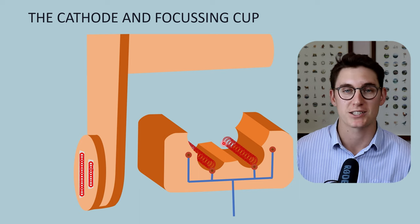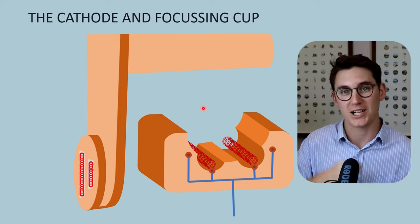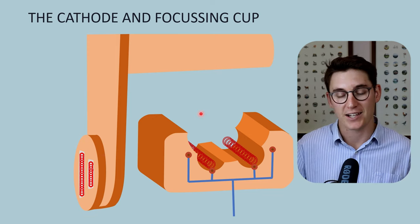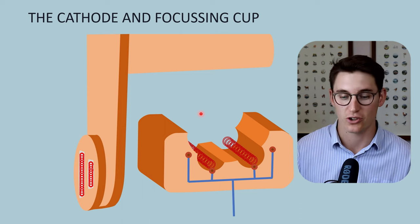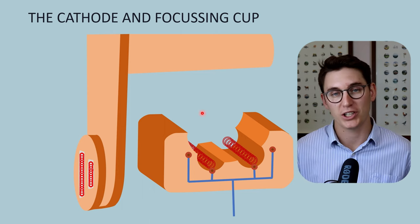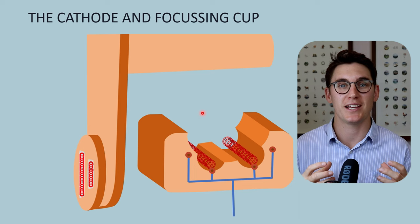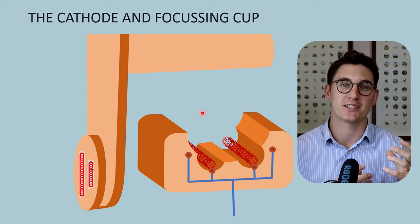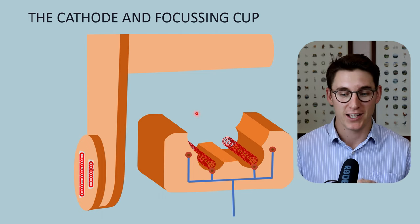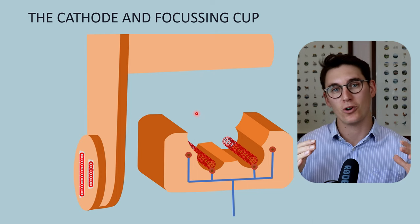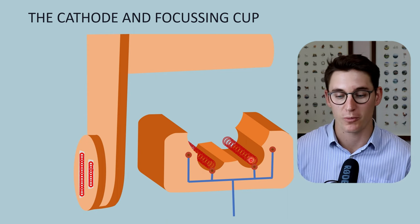Why exactly do we use tungsten for our coil? First, we can machine tungsten into a very thin coil and wrap that coil tightly within the cathode itself. That really thin tungsten will allow for a lot of surface area so we can generate lots of electrons on the surface of the coil. Not only can we machine it into a very thin filament, but tungsten itself has a very high melting point, and because this process requires a lot of heat, we need tungsten to maintain its structural integrity at high temperatures. Lastly, tungsten has a high atomic number with lots of valence electrons, making it a good thermionic emitter.